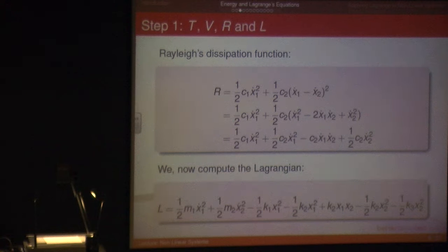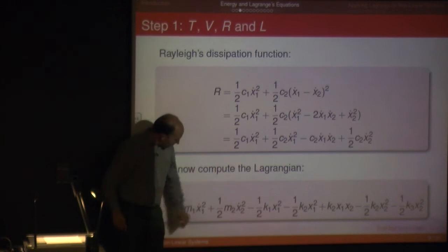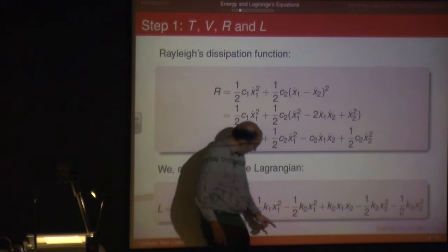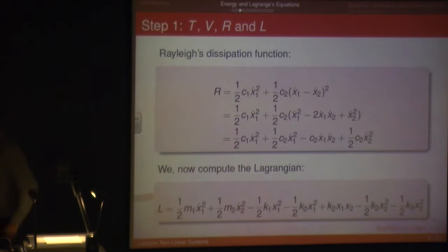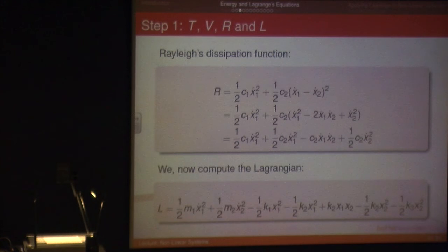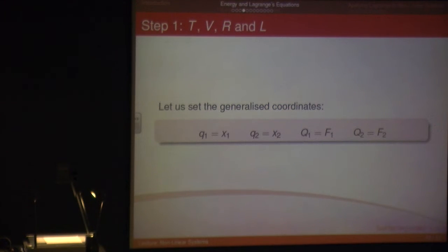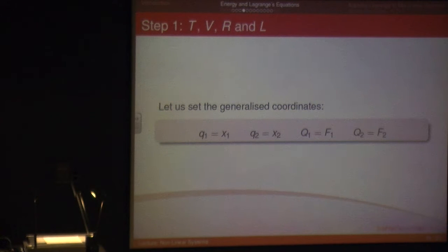Now I can work out what L is. Going back to my kinetic energy and potential energy — there's my kinetic energy, those two terms, and there's my potential energy, all those terms. Obviously it's a minus sign in L, so all those minuses change to pluses and all the pluses change to minuses. I'll set up the generalized coordinates first: X1 is Q1, Q2 is X2, and the generalized forces will be F1 and F2.